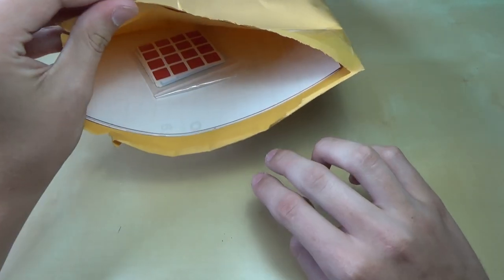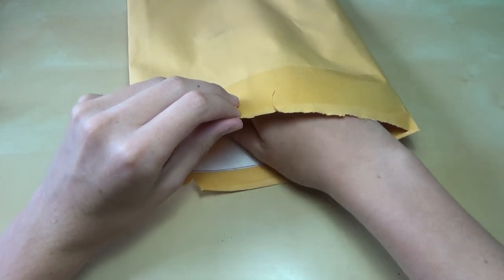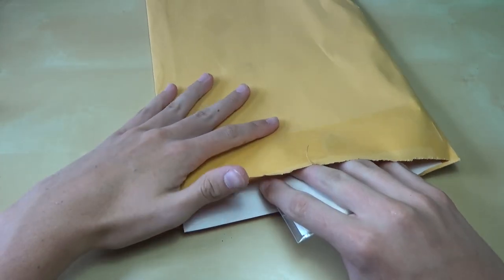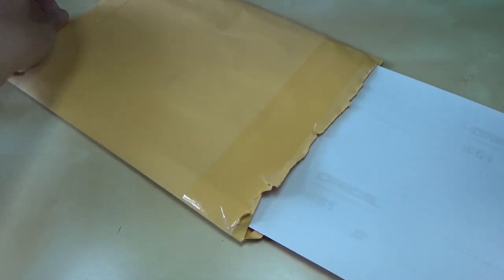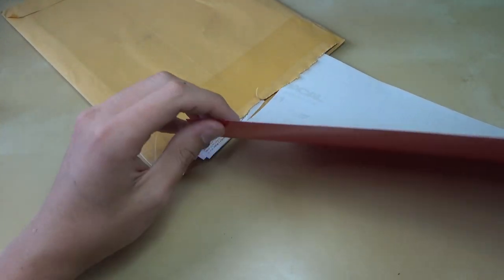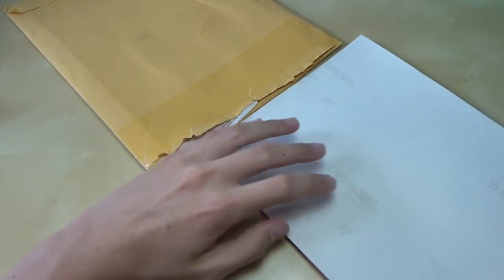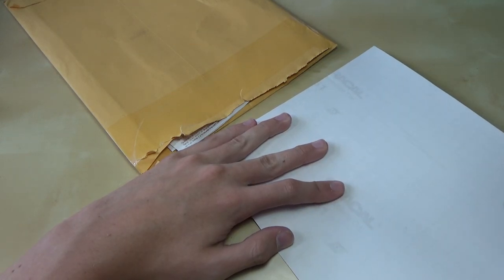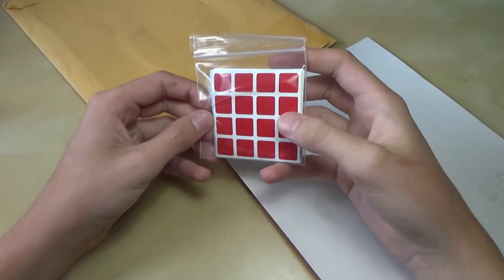So inside we have lots of stuff. First off, this is a set of 4x4 stickers. Oh, it's just a big sheet. Okay, there we go. Red. Let's just peel these off. There we go. That's just a set of 4x4 stickers.